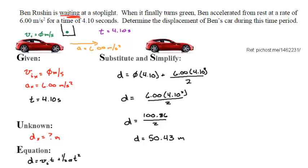Now, since this has 3 sig figs and this has 3 sig figs, my answer will have 3 significant figures, so the distance in the x is going to be 50.4 meters.